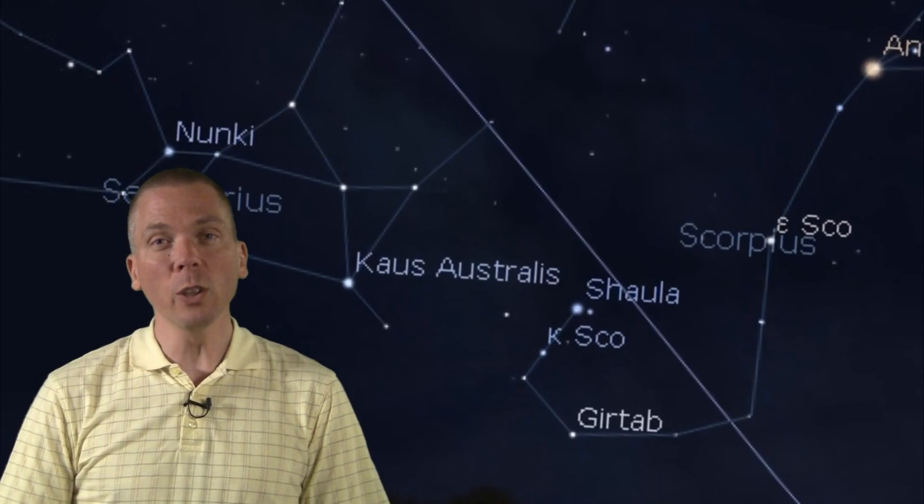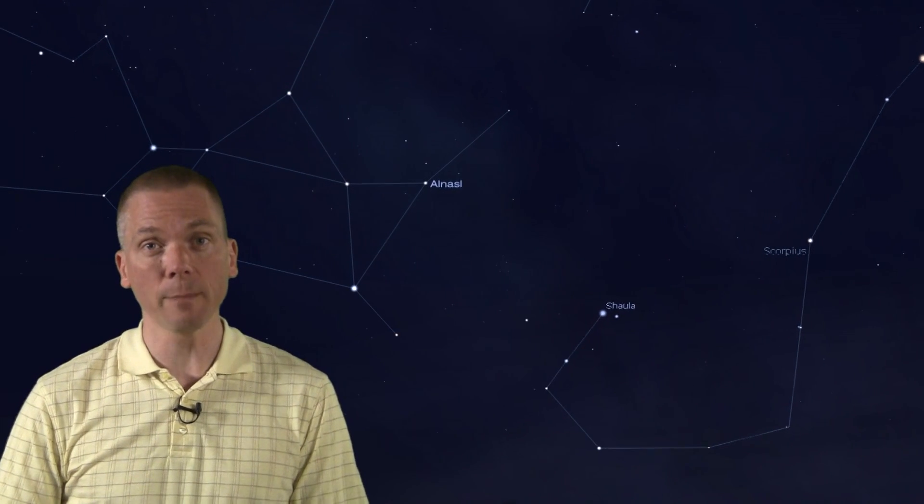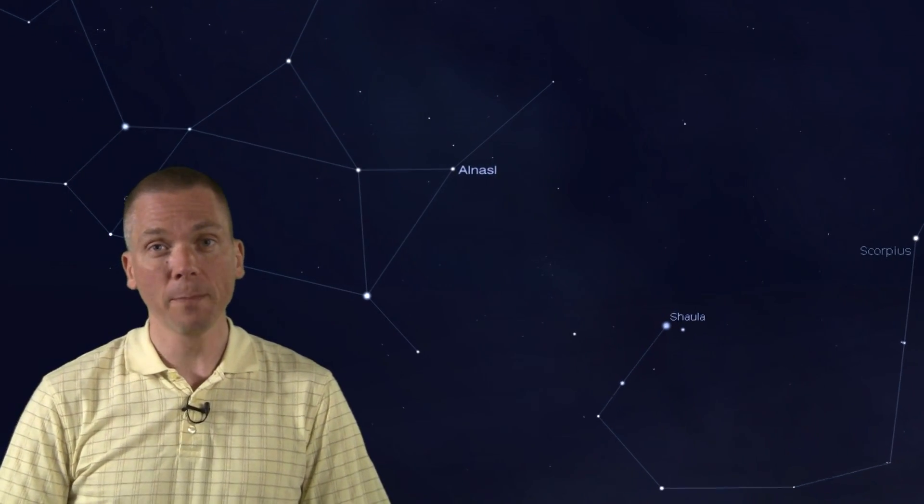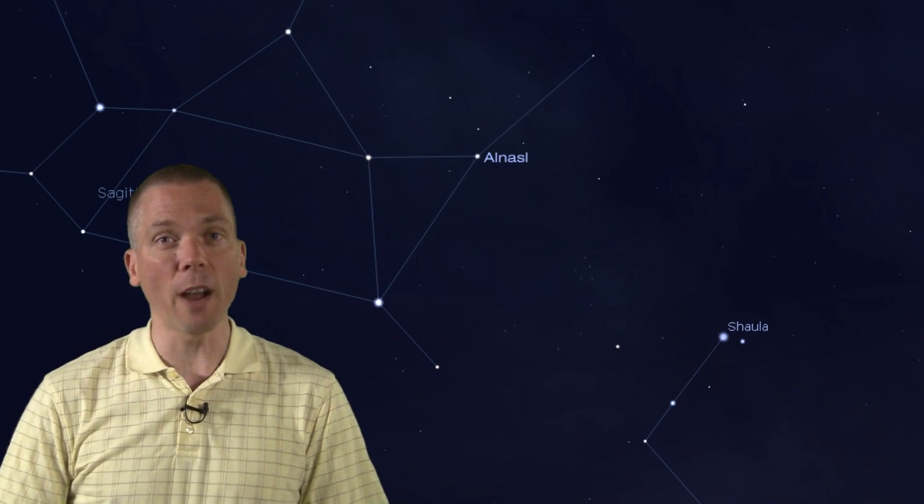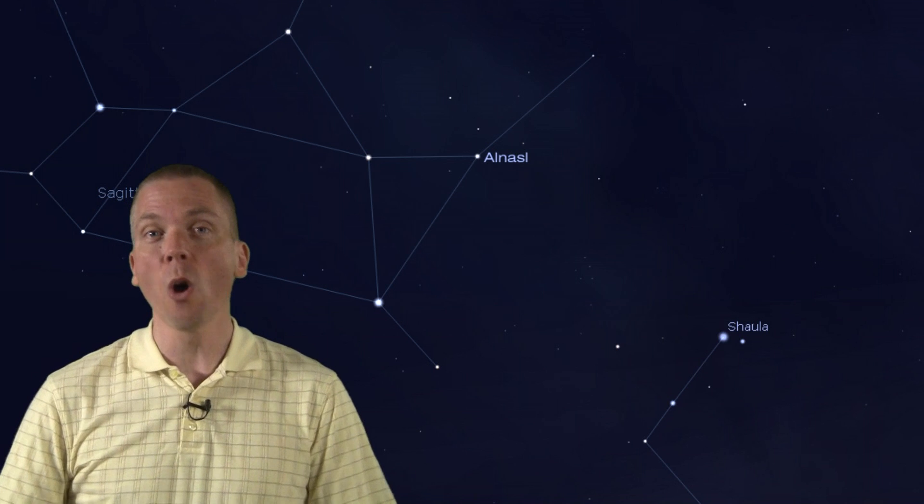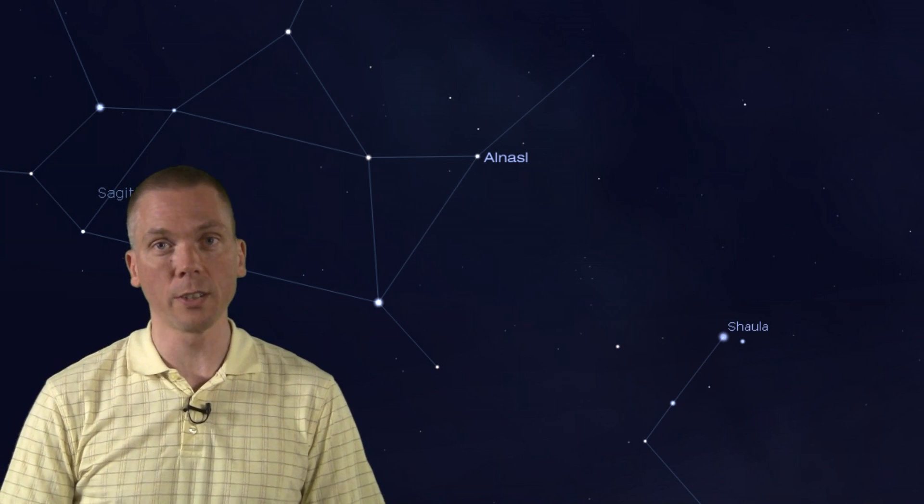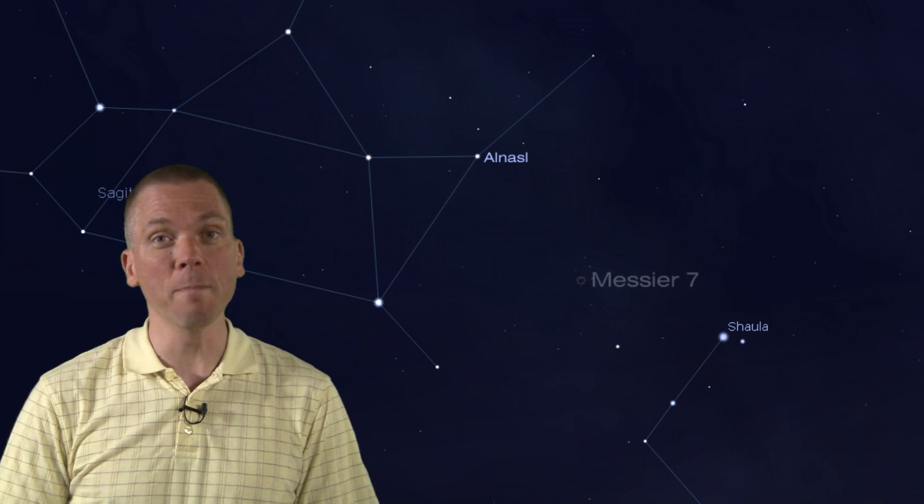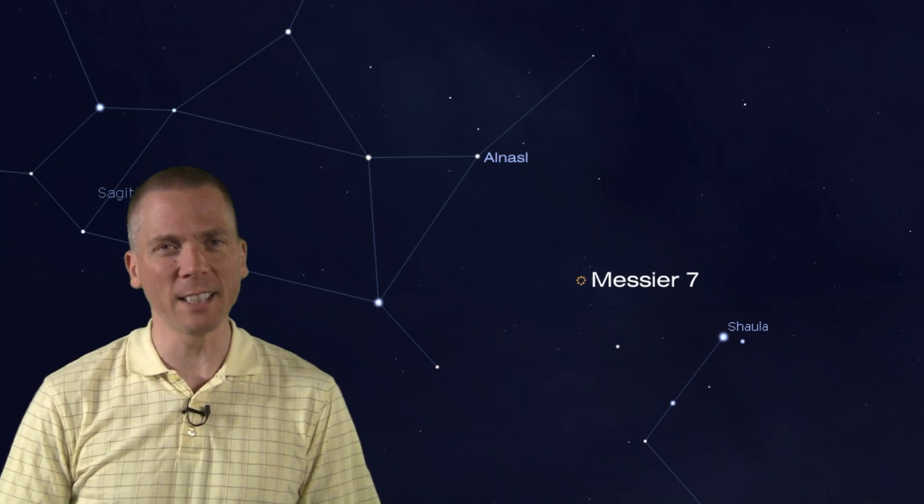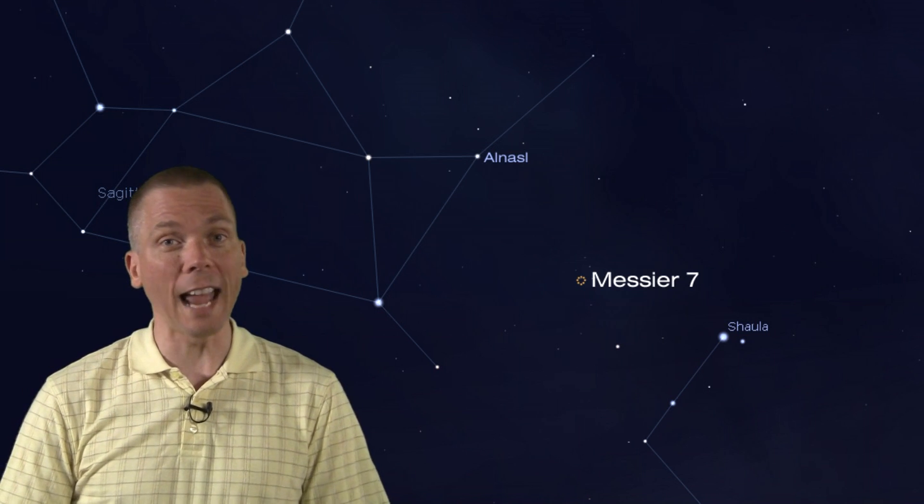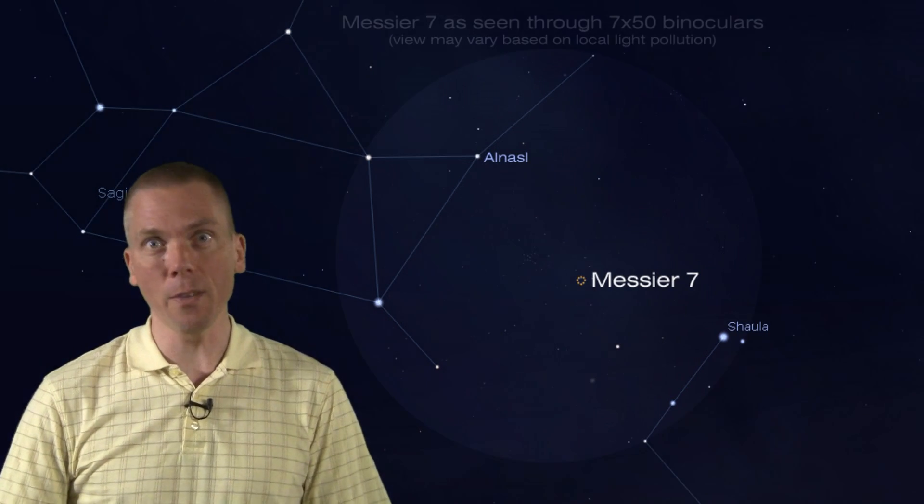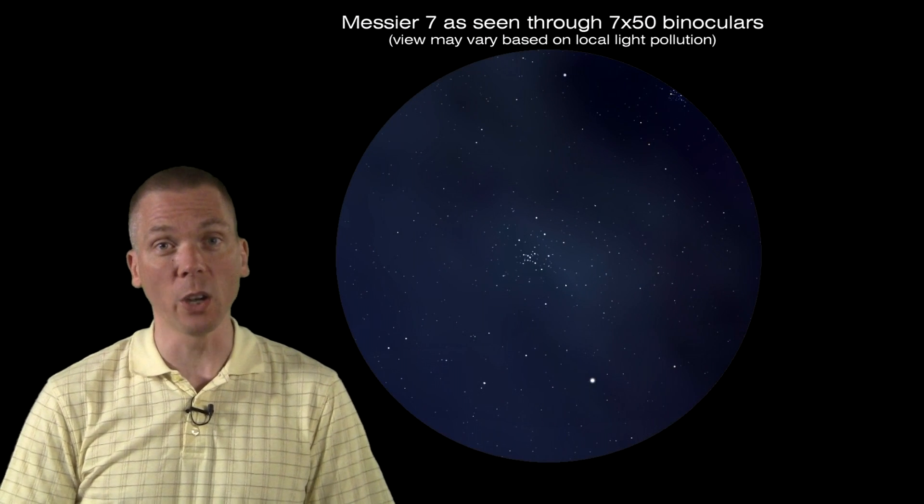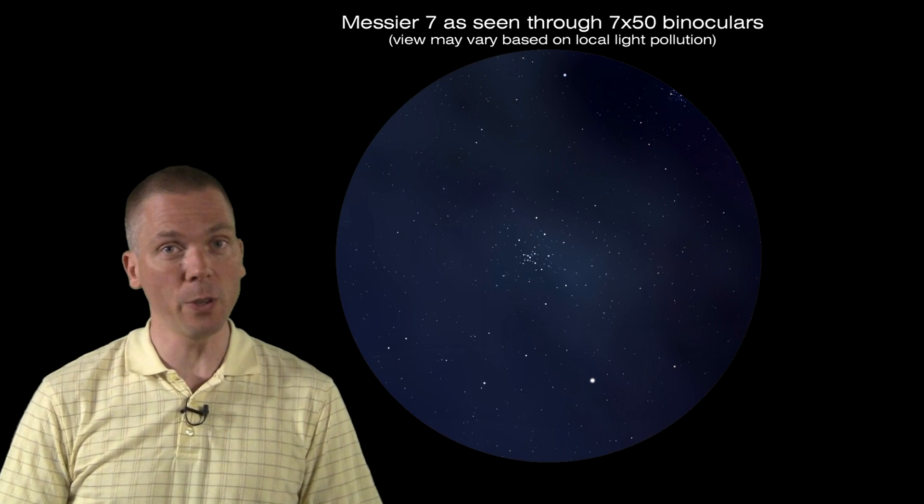Now, look at the space between Al Nassil in Sagittarius, the star at the spout of the teapot, and Shaula, the second brightest star in Scorpius. Take some 7x35 or larger binoculars and aim them right between these two stars. The wonderful open cluster, Messier 7, blazes into glory here. And due to its angular diameter of nearly 1.5 degrees, binoculars are the best way to view it compared to a telescope that would have a narrower field of view.